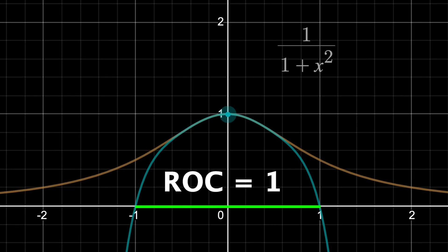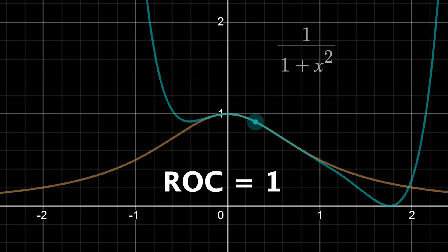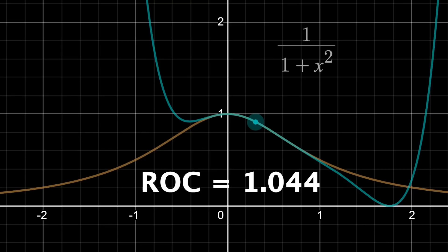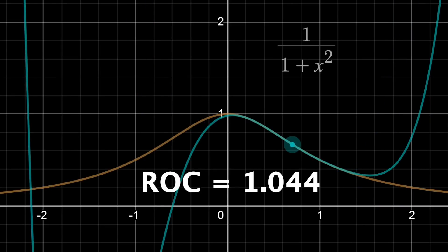Then when I move to x equals 0.3, the radius of convergence is about 1.044. And at x equals 1, the radius of convergence is the square root of 2.